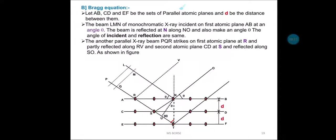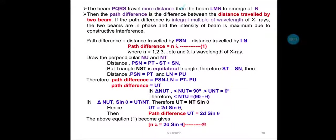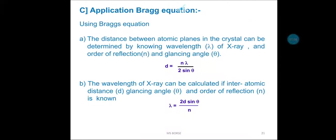The Bragg's equation we derived is: n lambda is equal to 2d sin theta, where n is the order of reflection, lambda is the wavelength of X-ray radiation, d is the distance between two successive planes, and theta is the angle of incidence or reflection. Both angles are the same and are called the glancing angle. We also discussed the application of this Bragg equation to determine the lattice parameter — that is, the distance between the two planes.